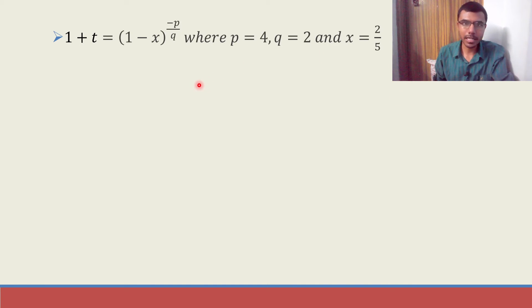Just substitute them and then most of your job is done and the basic calculations. Just substitute it. p is 4, q is 2 and x is 2/5.